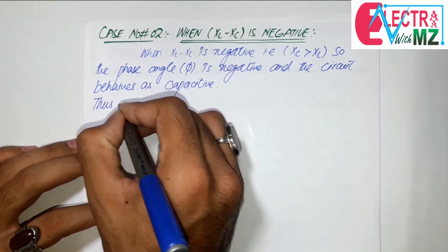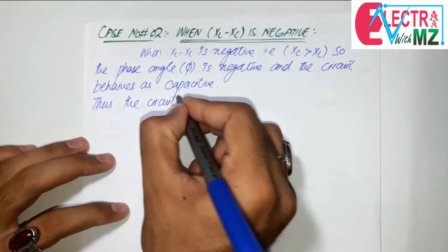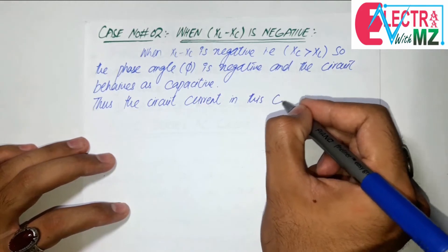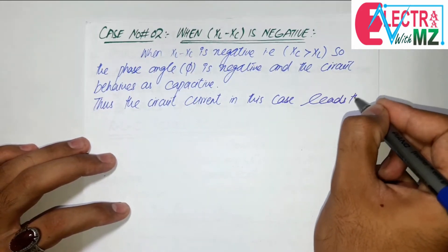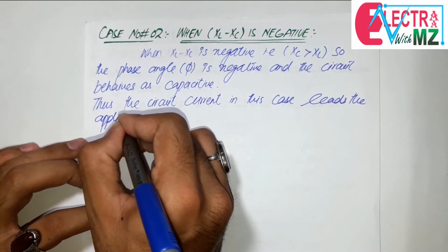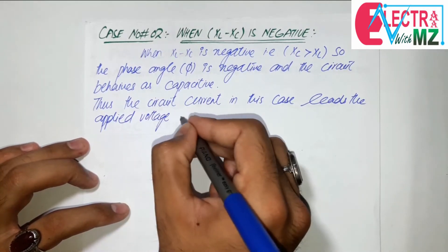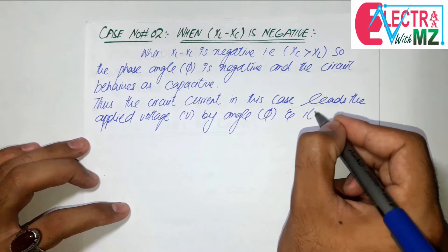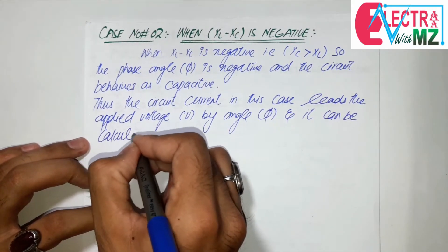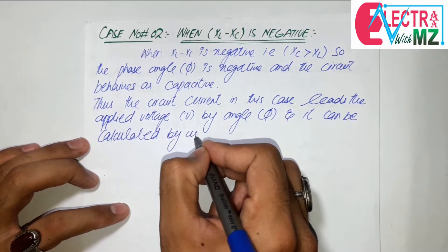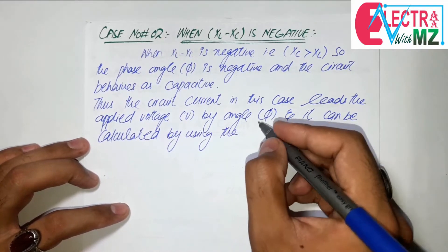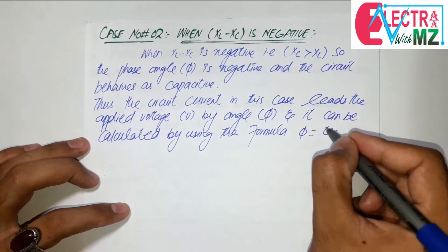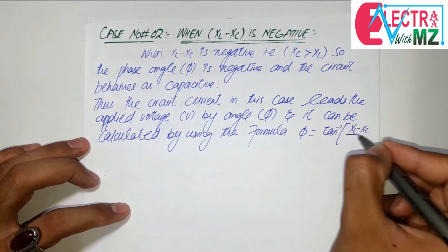Thus the circuit current in this case leads the applied voltage V by an angle phi, and it can be calculated by using the formula: phi is equal to tangent inverse of (XL minus XC) divided by R.